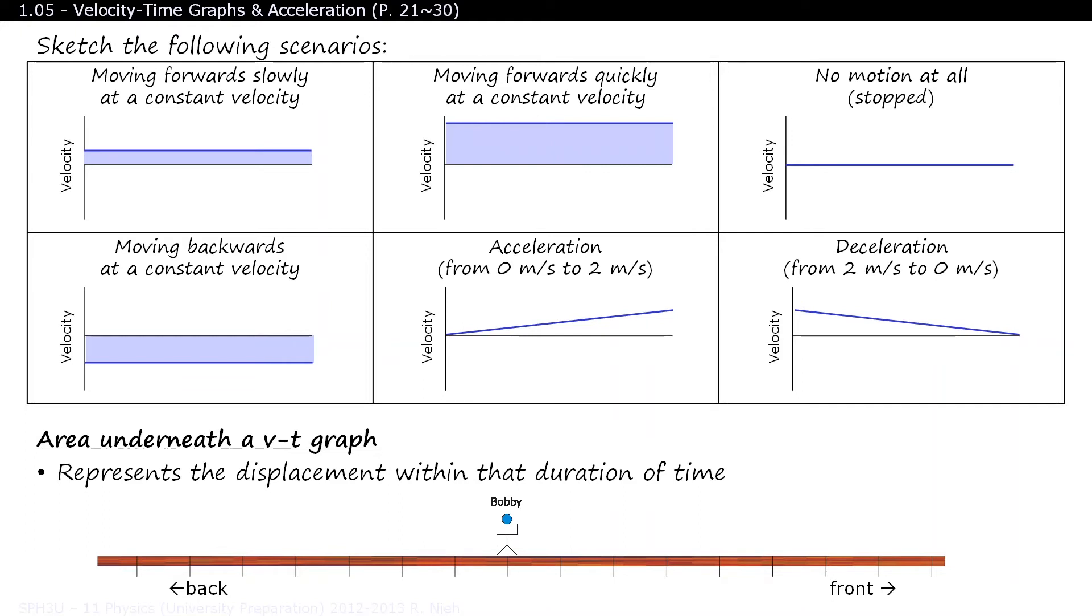Bobby, start from rest and gradually speed up. You'll notice the area of the triangle is really small at the beginning as Bobby is traveling slowly. But as he gradually speeds up, the area of the triangle increases significantly.